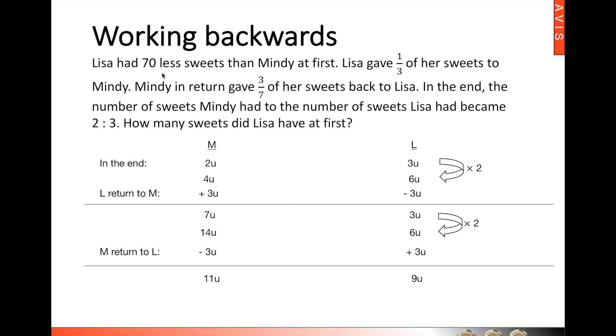We were told that Lisa had 70 sweets less than Mindy at first, which is 2 units. So, 1 unit would then be 35 sweets. Let's answer the question. The question asks, how many sweets did Lisa have at first? Looking at the initial ratio of 9 units, Lisa would then have 315 sweets.